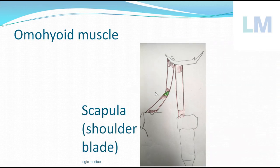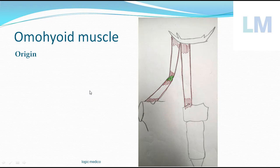What is the origin of this muscle? It comes from the scapula — the shoulder blade — towards the hyoid bone, therefore it's called omohyoid. Scapula in Latin is called 'omo.' The origin is from the upper border of the scapula, nearer to the suprascapular notch. The suprascapular notch is bridged by a ligament called the suprascapular ligament. You have to say: upper border of scapula close to the suprascapular notch. If you also remember the suprascapular ligament, even better. That is the origin.